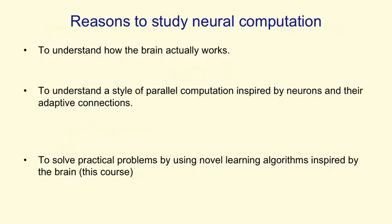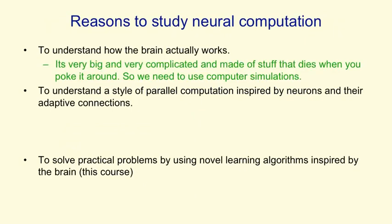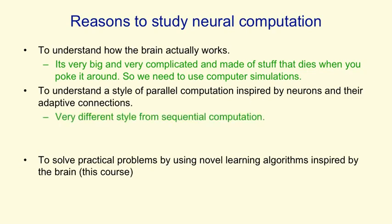There are several different reasons to study how networks of neurons can compute things. The first is to understand how the brain actually works. You might think we could do that just by experiments on the brain, but it's very big and complicated, and it dies when you poke it around, so we need to use computer simulations to help us understand what we're discovering in empirical studies.